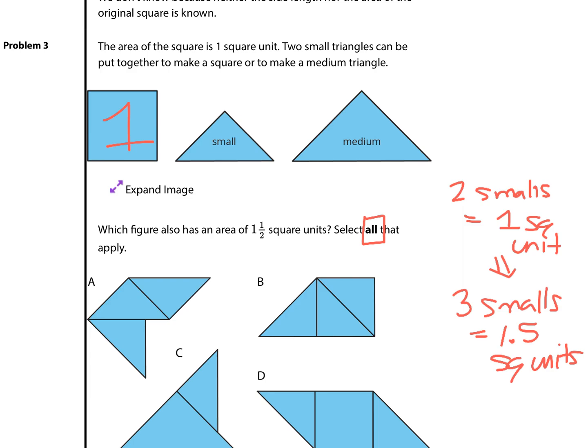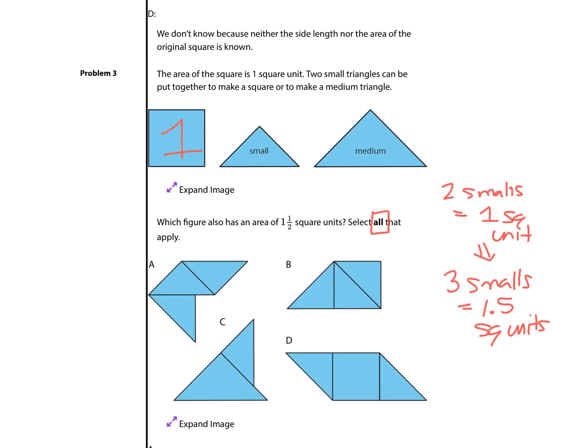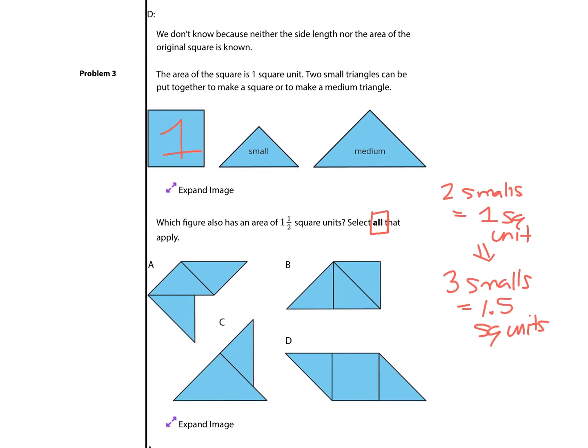So, if we can find shapes that have three small triangles, those will be equivalent to one and a half square units. Which ones are that? A looks like we do have three small. So, A counts. So does B. C only has two figures and we'll come back to that. D has two smalls and one square. Well, that would be two units. So, that's not it. Let's look at C. We know that two smalls can be put together to make a square or make a medium triangle. If I kind of draw this line here, I all of a sudden have one, two from the medium triangle, and then a third there. So, there's C. So, our solution here is A, B, and C.